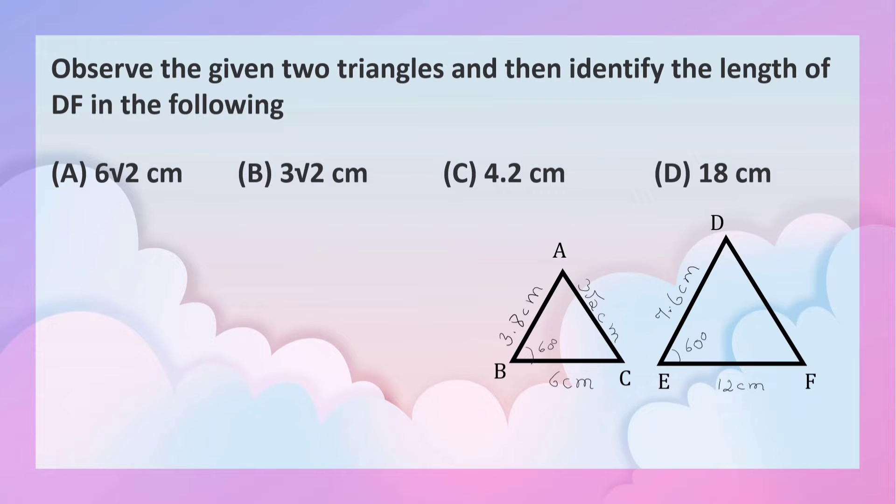Observe the given two triangles and then identify the length of DF in the following. This is DF. We have to identify the length from the four options here.